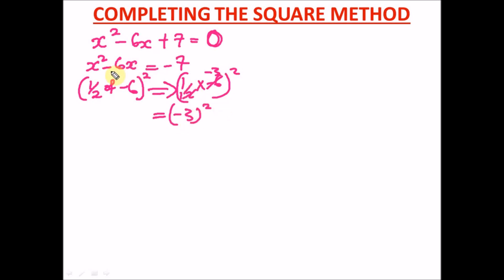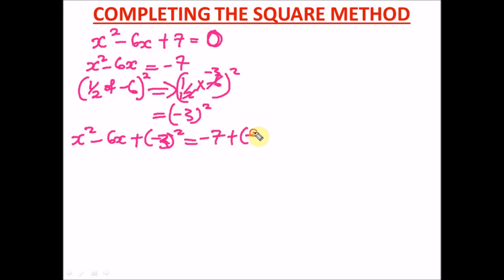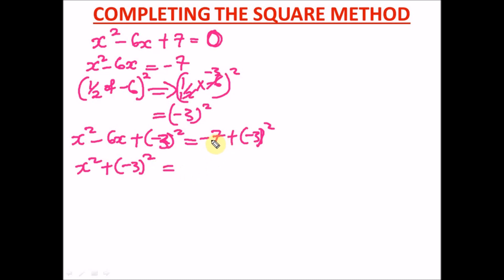We add (minus 3)² to both sides. So we have: x² minus 6x plus (minus 3)² equals minus 7 plus (minus 3)². Now our fourth step is to take the squares on the left-hand side. On the left we have x² and plus (minus 3)², and on the right we solve the arithmetic.